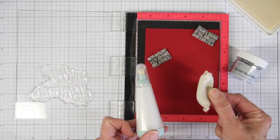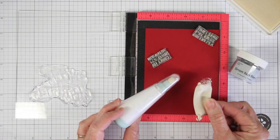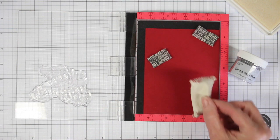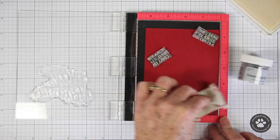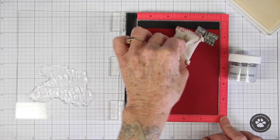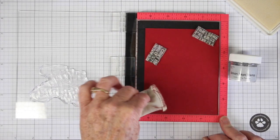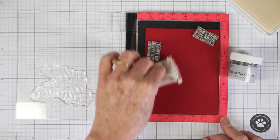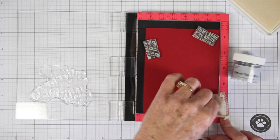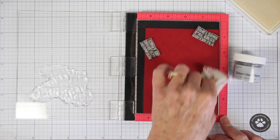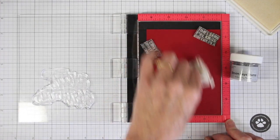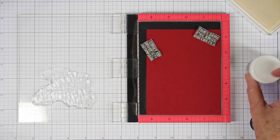Before I stamp, I like to treat my paper with either a powder or my pouch. This helps remove all the static or any oils from your fingers. I'm just going to run this pouch over the area where I'm going to stamp, going over a few times to make sure I have enough of the powder that's within the pouch.